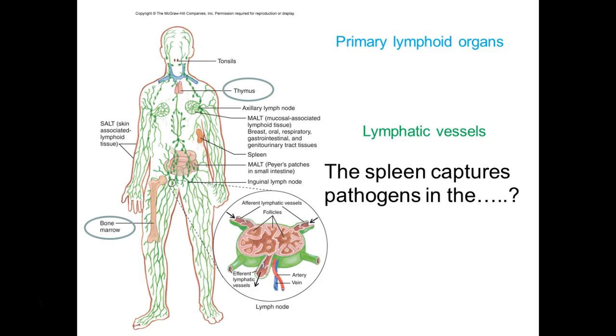B for B cells — bone marrow for B cells, T for T cells. Although in truth, that's not where B cells actually got their name. But it works out as a handy mnemonic.